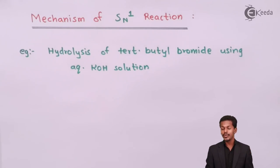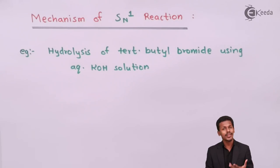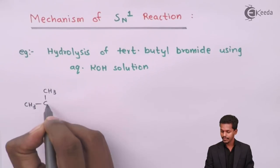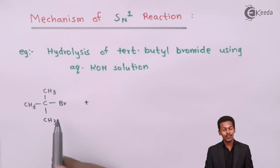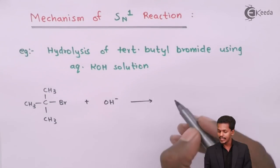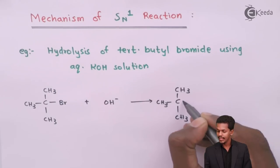The hydrolysis of tertiary butyl bromide using aqueous KOH shows SN1 mechanism. Since we are talking about a nucleophilic reaction, the OH⁻ will be responsible for substituting the bromine atom. So writing OH⁻ as the nucleophile, the substitution reaction gives us tertiary butyl alcohol.